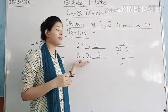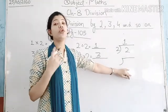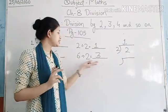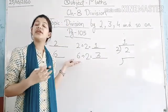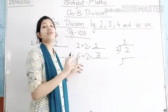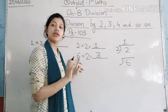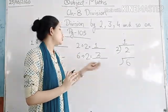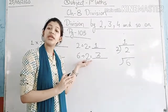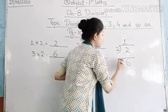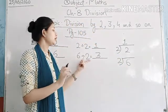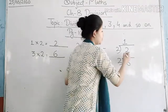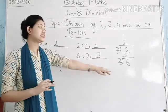Now how will we arrange these numbers in the division symbol? Which number will come inside the symbol? The dividend — 6. So we place 6 inside the symbol. Which number will come outside the symbol? The divisor — 2. So we write 2 outside the symbol. And 3 is acting as the quotient, so 3 will be placed above the symbol. I hope this is clear to you all.